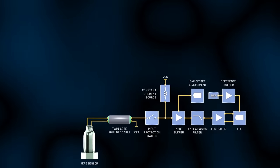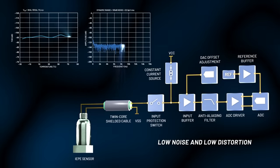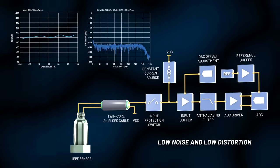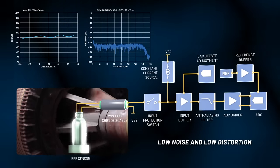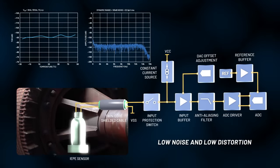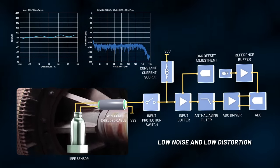The low noise and extremely low distortion across the typical accelerometer and acoustic vibration band exposes the smallest changes in behavior, so anomalies or changes in asset health can be detected earlier.